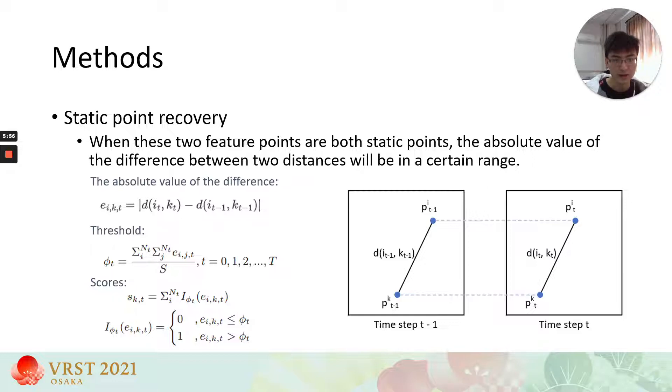If the error e_i_k_t is lower than phi t, the feature point k can be considered to be static points. Otherwise, it is considered to be dynamic points and the dynamic score plus 1. Taking possible errors of some points into account, we calculate scores with all the static points outside the box.